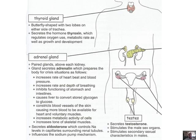The adrenal gland is a pair of glands above the kidneys. They secrete adrenaline, which prepares the body for a crisis situation — the whole fight, flight, or fright response. This is something you need to know off by heart as it does come up in exams.